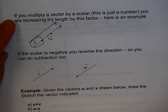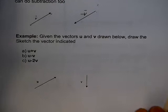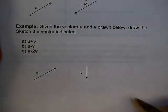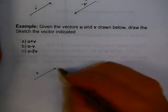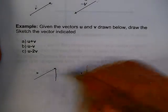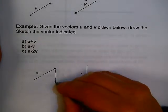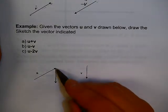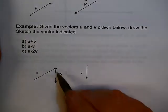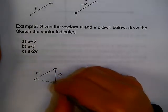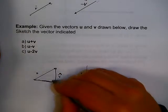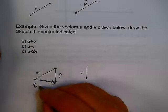Given two vectors u and v, let's draw the resulting vector u plus v. Using the triangle method, I attach the tail of v to the head of u. Then the resultant is just this vector, starting at u and ending at v. So that's u plus v.